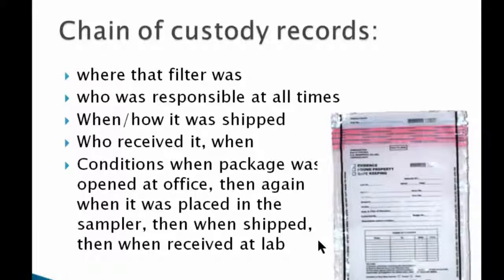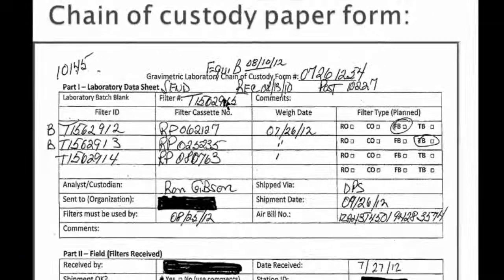What we're talking about is legally admissible evidence, which gives you an idea of how important it is that you do everything according to procedure, that you write it down, and you complete the chain of custody records. This is an example of a chain of custody form.